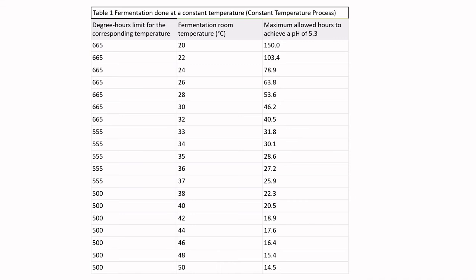For example, if fermentation took place at 30°C, pH must drop below 5.3 in fewer than 46.2 hours. If the product went in on Monday at noon, it would need to reach pH 5.3 before Wednesday at 10 a.m. That calculation is considered acceptable provided fermentation is done at a constant temperature — the table allows for come-up time as the fermenter initially drops in temperature.